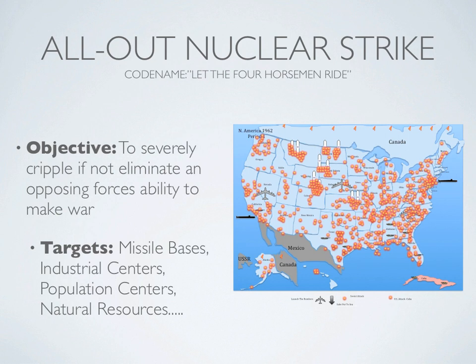An all-out nuclear strike is designed to decimate the other side's ability to launch a counter-strike, mobilize their forces, or recover at all. Recovery from this scenario would take hundreds of years, and in some places might not be inhabitable for thousands of years.